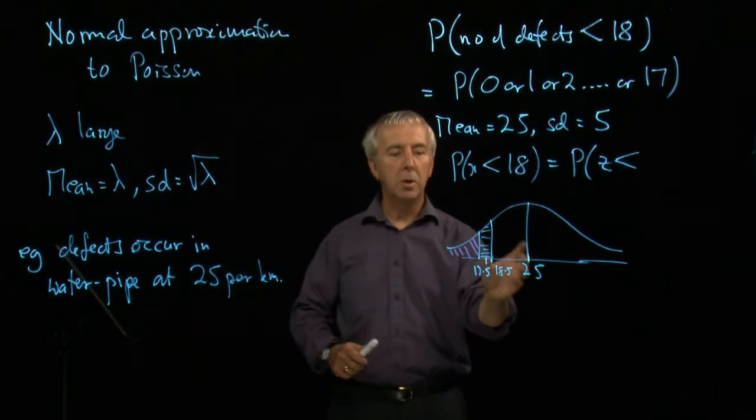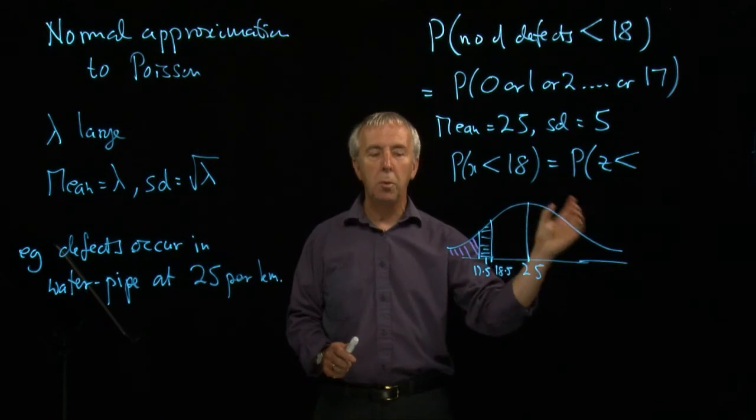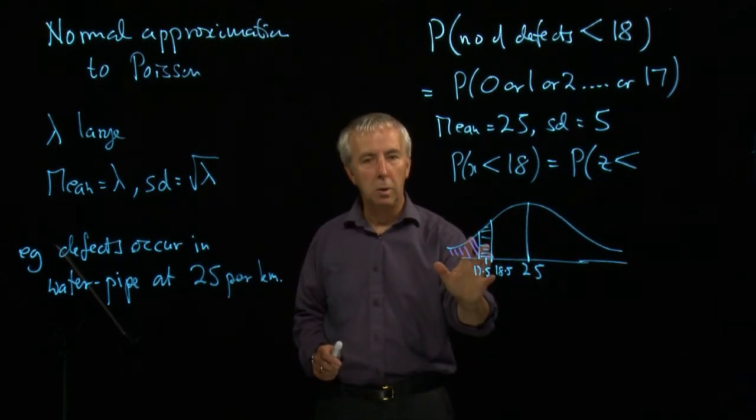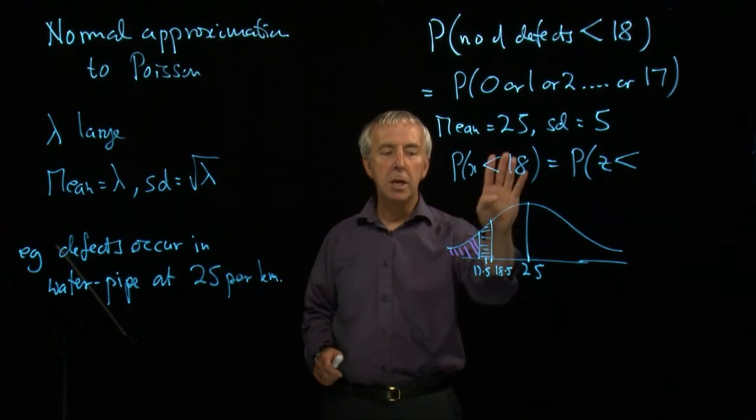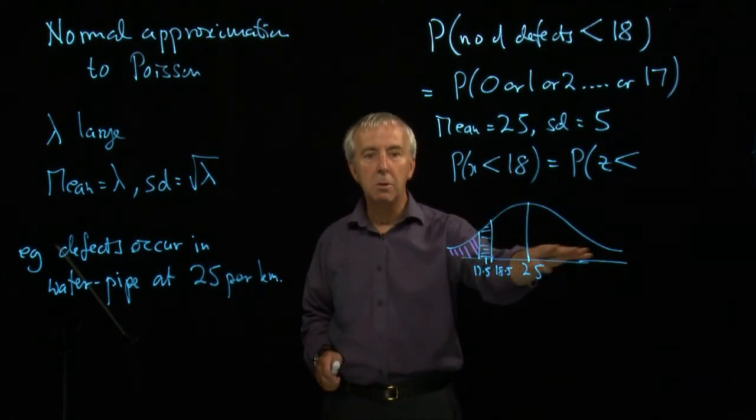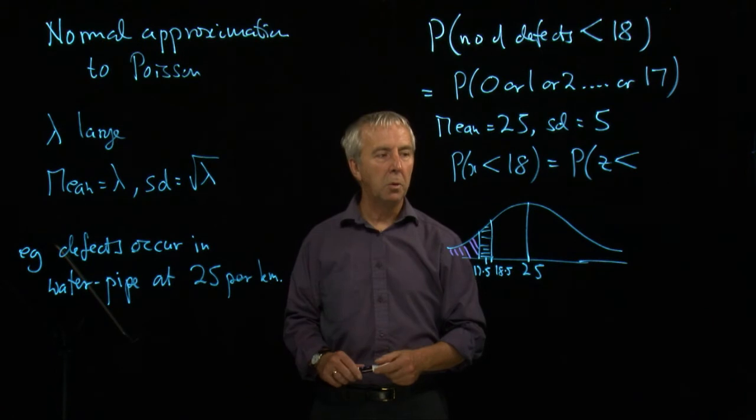The problem is that we're going from a discrete distribution, the Poisson, to a continuous one. So on the discrete one, you either have 17 or 18 or 19. But now we've got a continuous axis, we have to be a bit more careful.